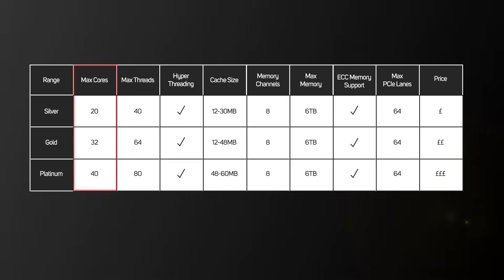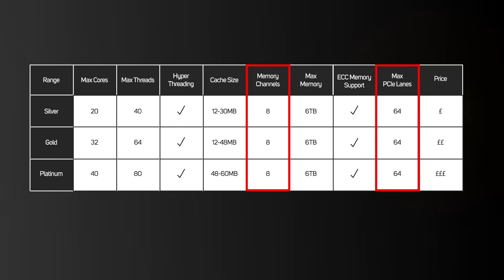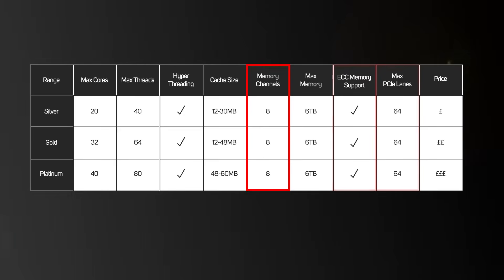Firstly, the core and thread counts go much higher. And secondly, the cache sizes are bigger too. Now, although these all play a part in additional performance for demanding tasks, it's the greater number of memory channels, more PCIe lanes and ECC memory support that add far greater capability and reliability.